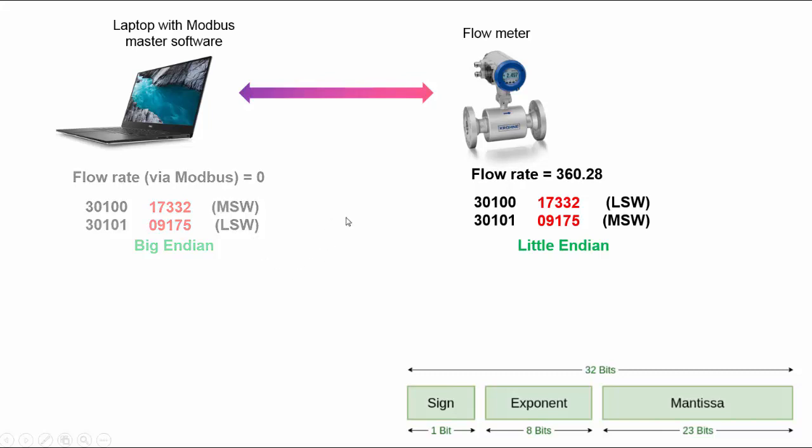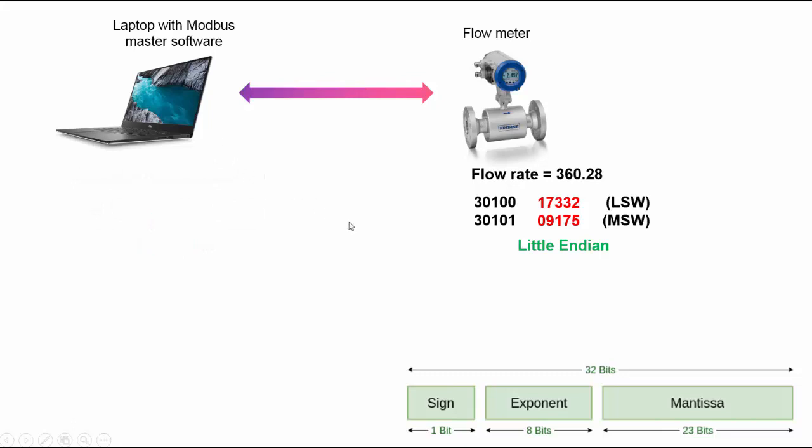So what I had the student do is to switch. Thankfully, the Modbus master software had the capability to switch to Little Endian format, and once they did that, the flow rate came back as 360.28, which was correct.